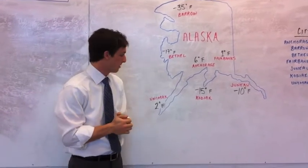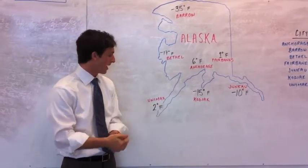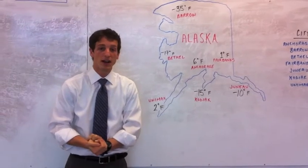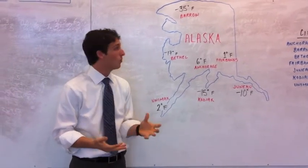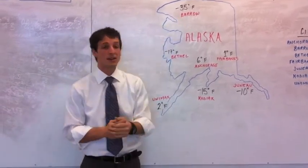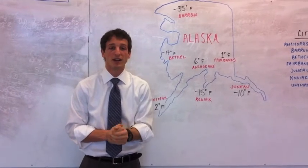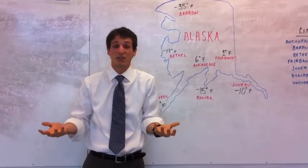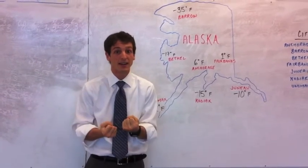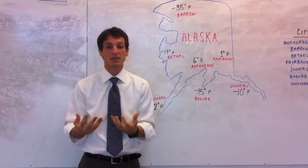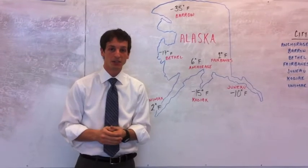So for example, you can look at Unamak with 2 degrees Fahrenheit. That's actually a lot warmer than Barrow at negative 35 degrees Fahrenheit. You can imagine being at negative 35 degrees near the Arctic Circle is freezing. That's the same concept as ordering an integer.